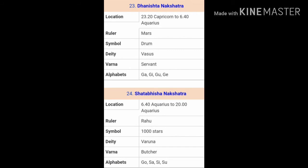The next Nakshatra is Dhanishta, ruled over by Mars, with the presiding deity being Vasu. Dhanishta is represented as a drum in the Zodiac. As the name implies, Dhanishta Nakshatra people generally accumulate a lot of wealth in their life — they crave for wealth and get the kind of wealth they desire. Dhanishta Nakshatra is good for material enjoyment but not so good for spiritual elevation. The next Nakshatra is Shatabhisha, ruled over by Rahu, also known as Shatatarika, meaning thousand stars. Shatabhisha people are very hardworking but, true to Rahu's nature, they are also involved in scandals and wrongdoings and earn wealth illicitly.